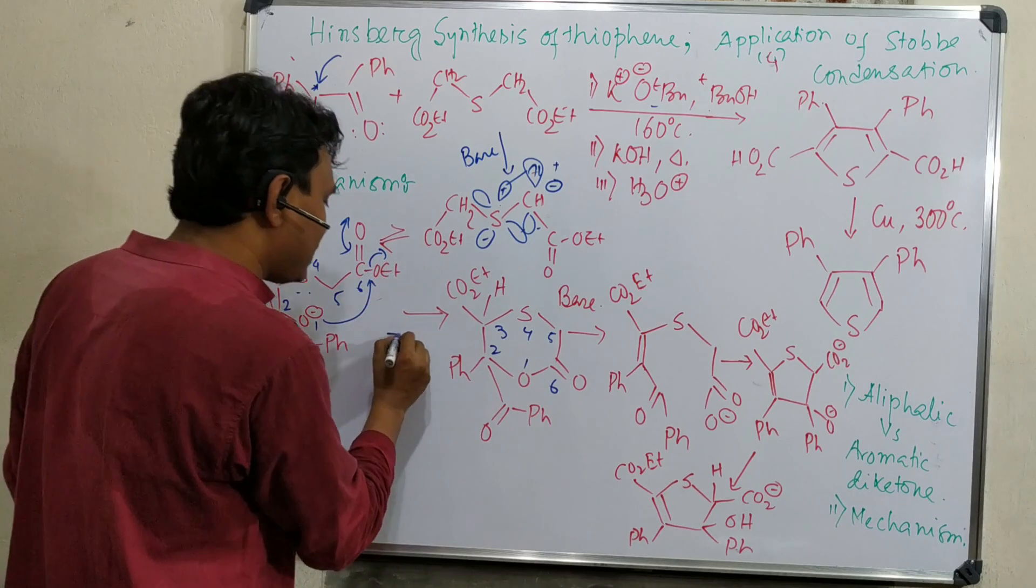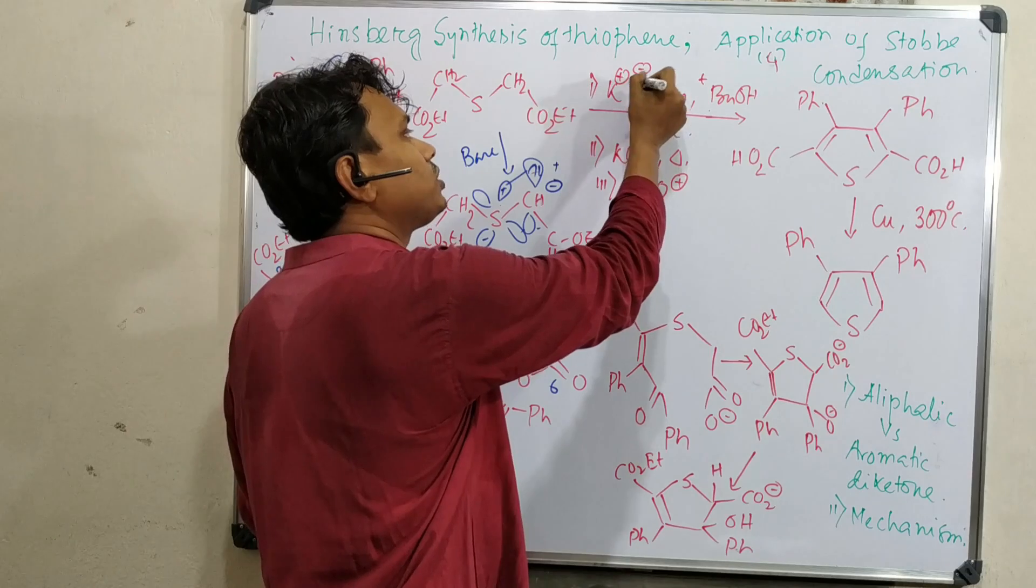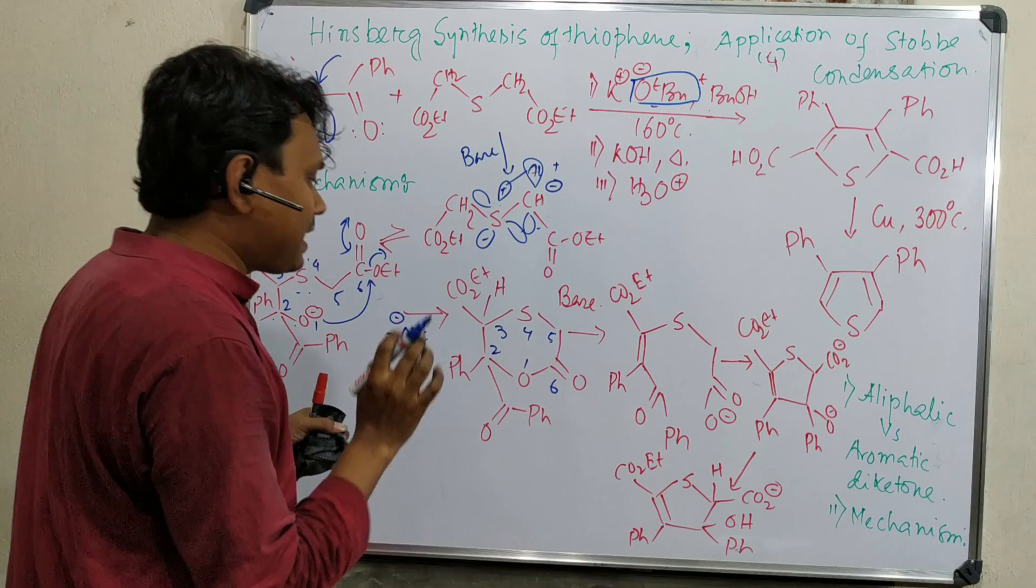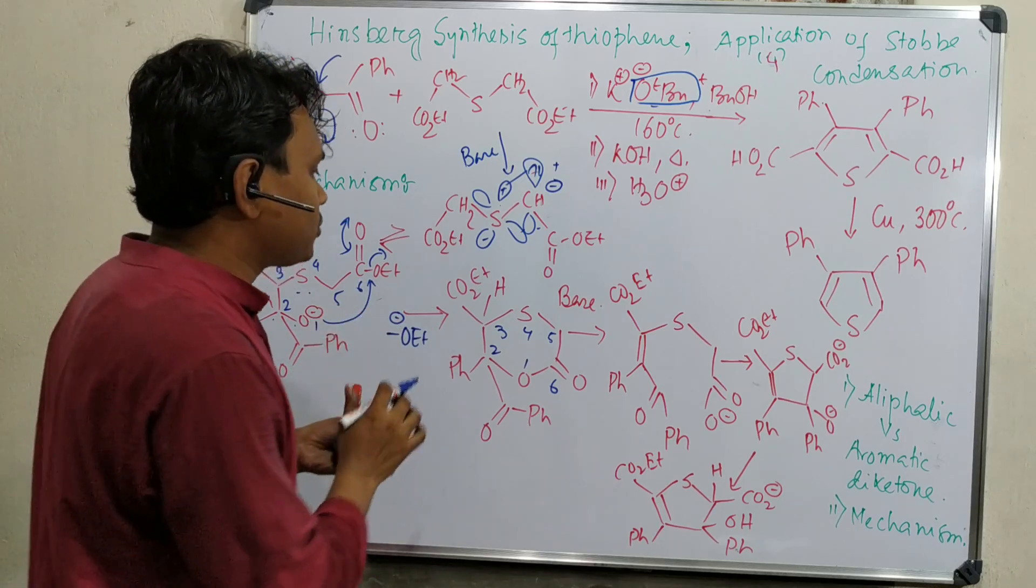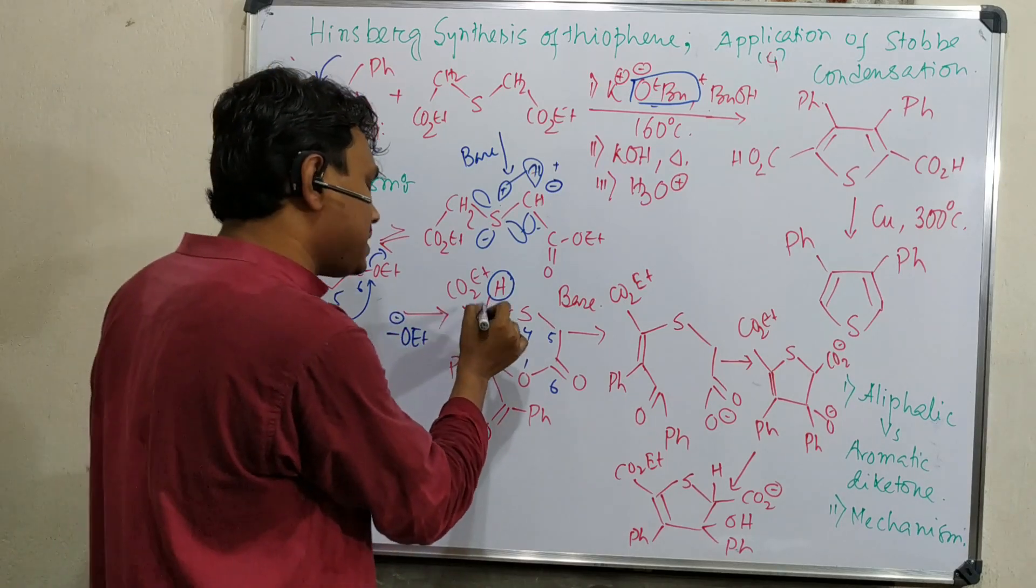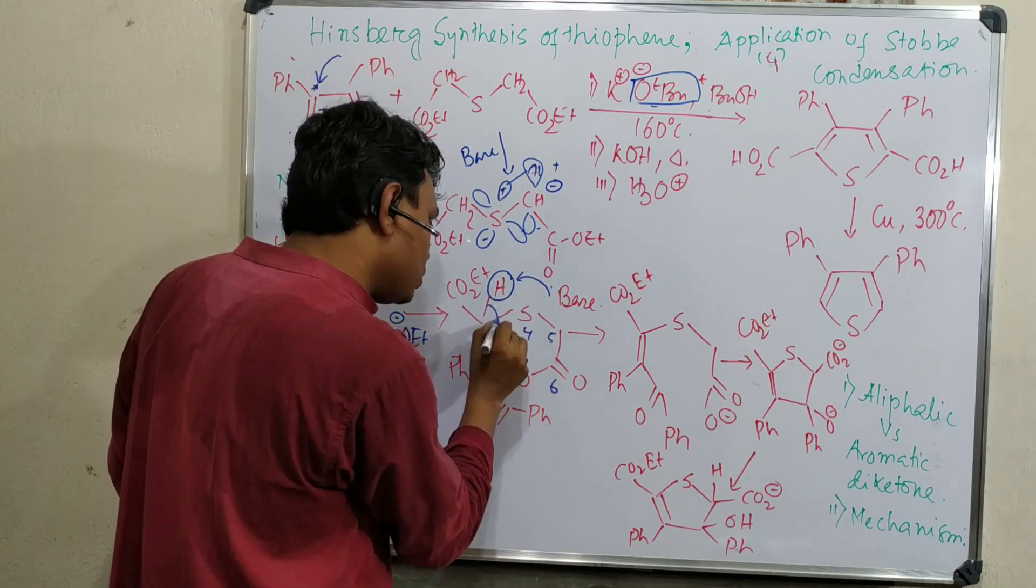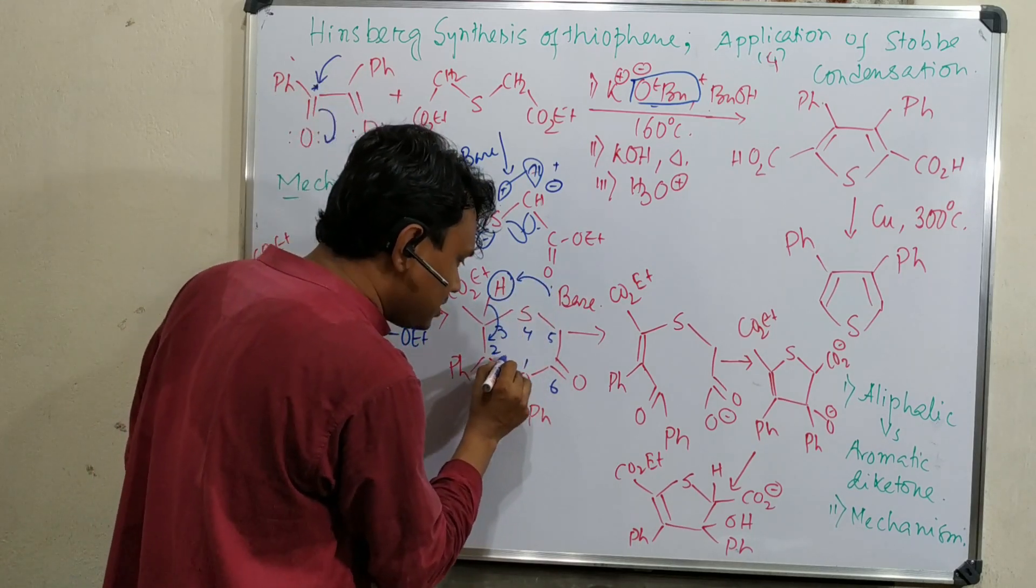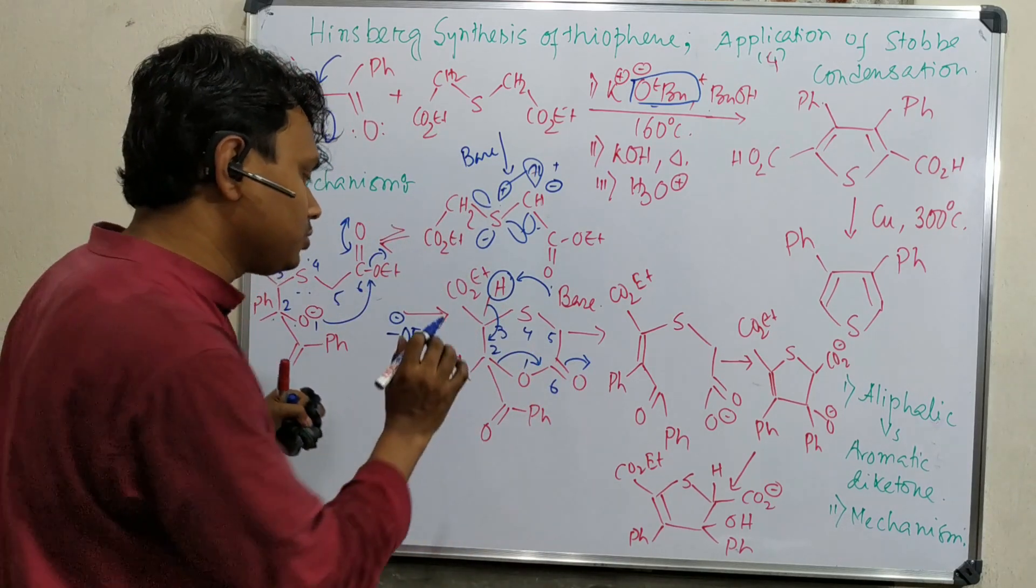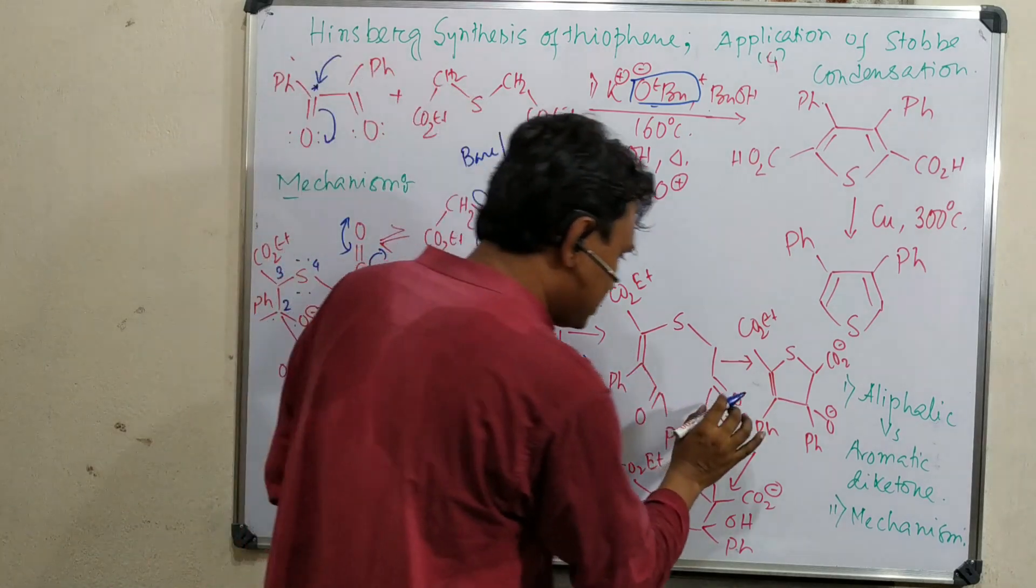This six-membered ring forms. In the medium, there is one O-Et eliminated, and previously there was one O-tBu present. Both are bases. So among these two, anyone can abstract the alpha hydrogen. Another alpha hydrogen is left, so it will be abstracted. If this is abstracted by the base, this lone pair will come here, and consequently, the O-Et will leave because the carbonyl group will stabilize the negative charge of oxygen through conjugation. After this, the ring will further open.